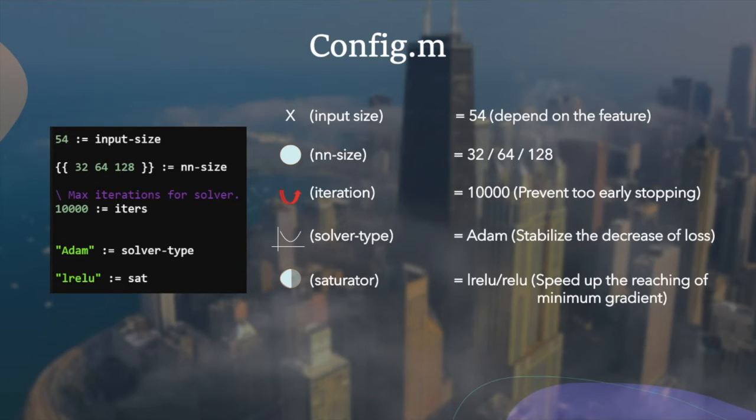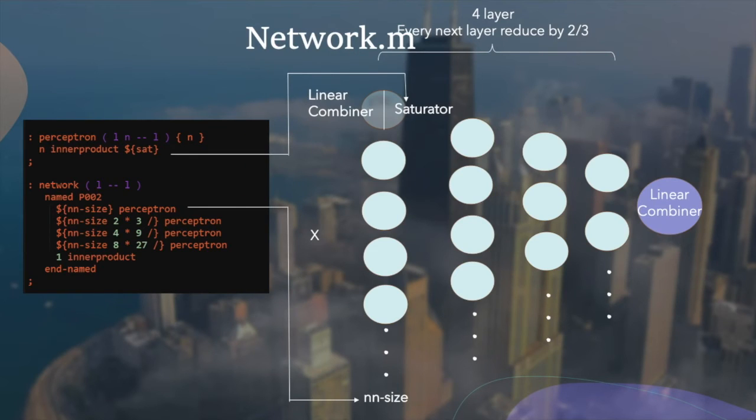10,000 iterations were used to prevent too early stopping. The solver type used was Adam to stabilize the decrease of loss, and saturator was LR-redu to speed up the reaching of minimum gradient. We used four layers here, reduced by two-thirds from the previous layer and one linear combiner at the end.